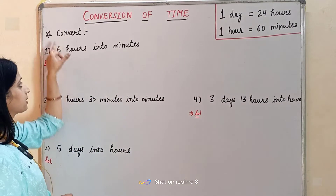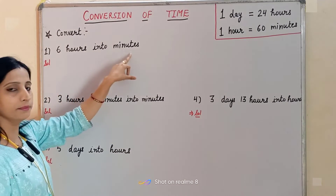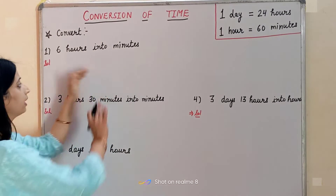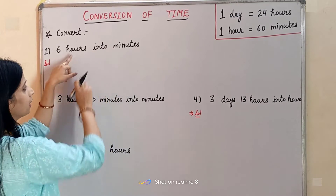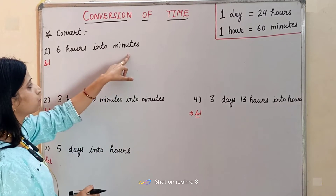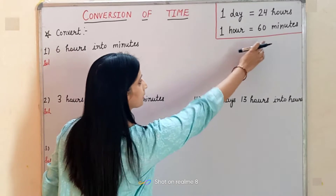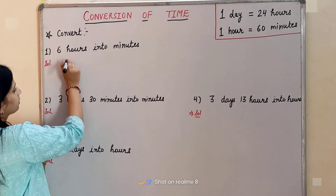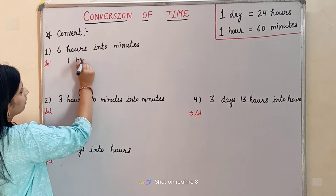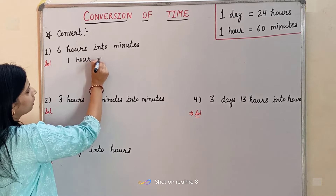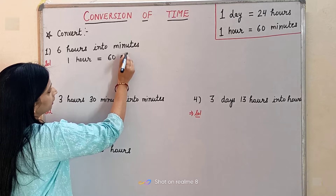The first question is: convert 6 hours into minutes. So here we have to convert hours into minutes. The relation between these two is: in one hour, there are 60 minutes. So let's write this — one hour is equal to 60 minutes.